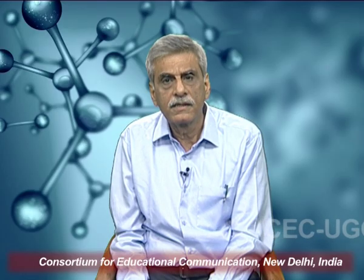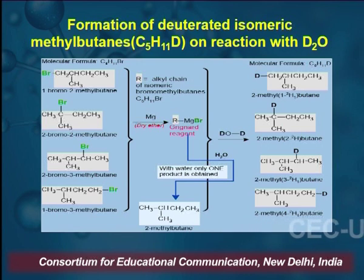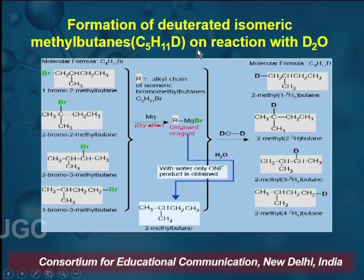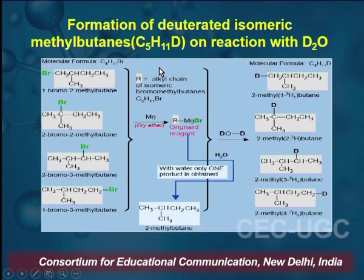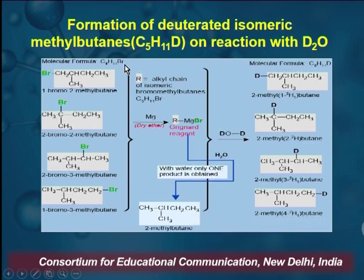This Grignard Reagent reaction provides an excellent route for the preparation of deuterated compounds. For example, four isomeric methylbutenes are treated with D₂O via Grignard Reagent — four different products are obtained. But if treated with water, only one product is obtained. This is because deuterium is not hydrogen, so it results in a different product every time.